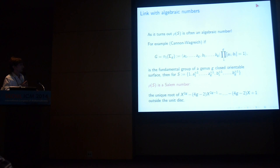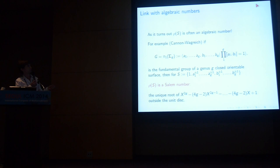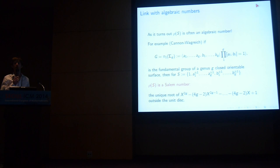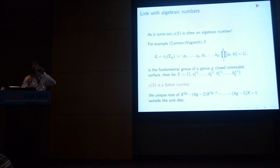For example, Cannon and Wagreich showed that if you take the fundamental group of a closed surface with its typical presentation, the growth rate is a Salem number. A Salem number is an algebraic number which is real, bigger than 1, all of whose Galois conjugates lie inside the unit disk except one which is outside, and you also require that at least one conjugate lies on the unit circle. So the growth rate 4(S) is the root of an explicit polynomial.